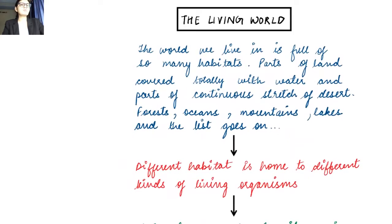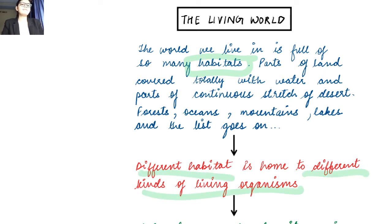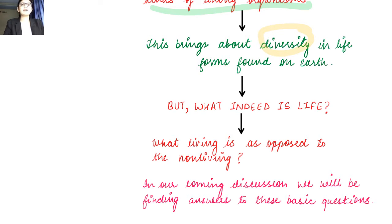Zooming into page 1 of our notes: the world we live in has so many habitats. Because of this varied habitat, all the different forms of life present on earth are also very varied. Different habitats are home to different kinds of living organisms, so there is diversity in life. This makes it a little harder to come up with criteria for living versus non-living. But what is life? What is living as opposed to non-living? Let's find out.